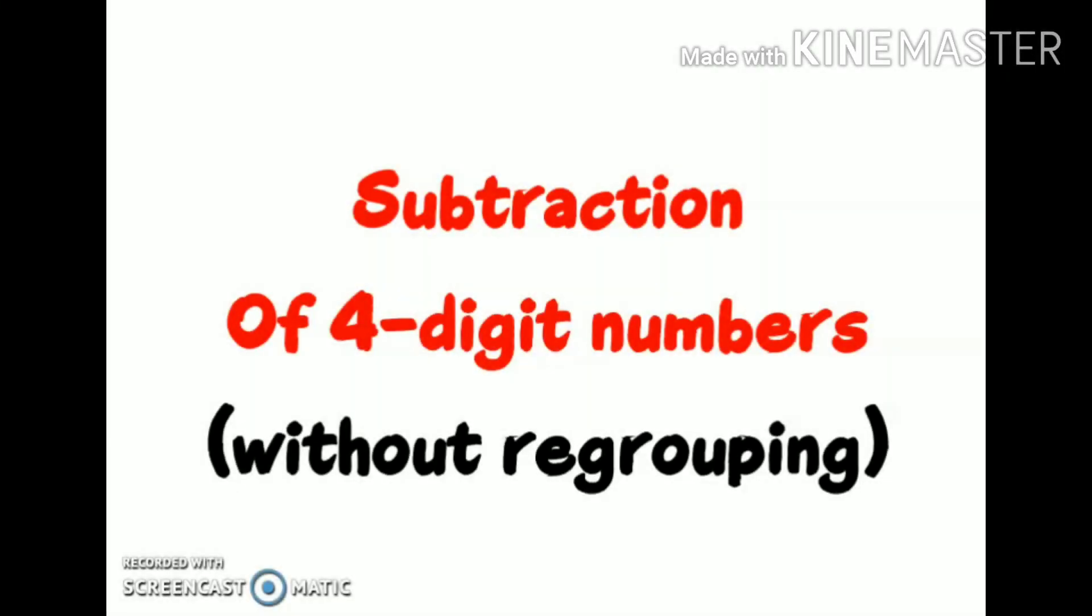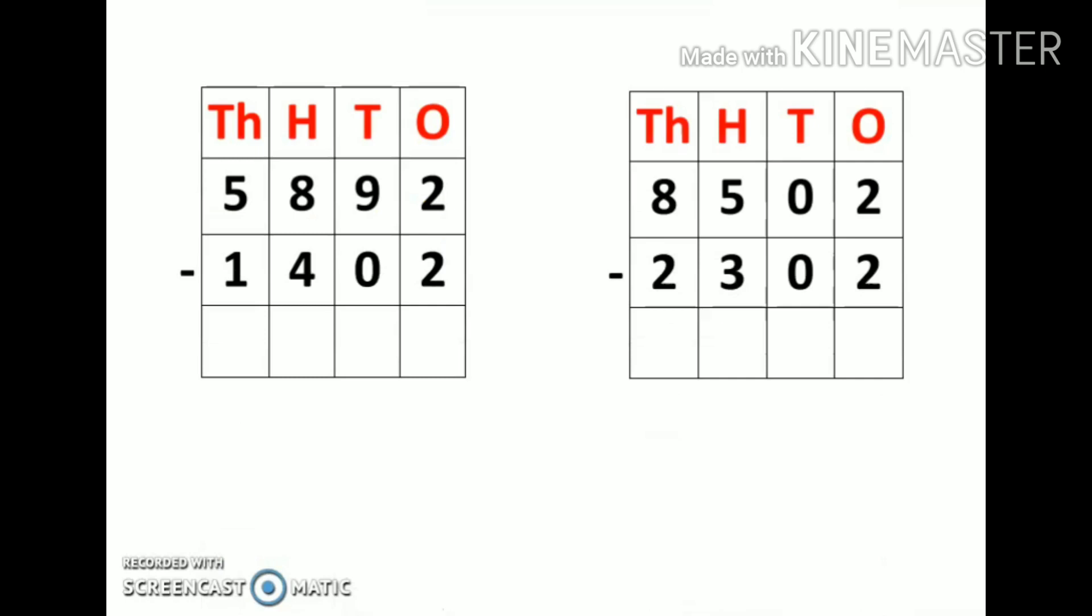Hi everyone, today we are going to do subtraction of four digit numbers without regrouping, means simple subtraction sums of four digit numbers. Our first sum is 5,892 minus 1,402.